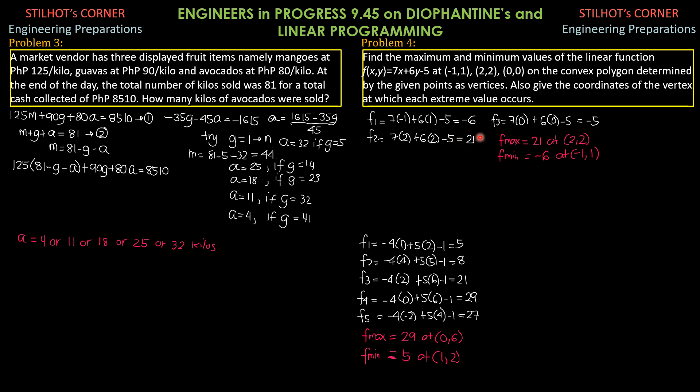Therefore, the maximum value is 21 and it occurs at the point 2 comma 2 and the minimum value is negative 6 and it occurs at the point negative 1 comma 1.